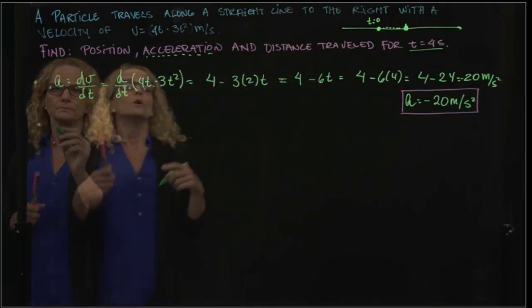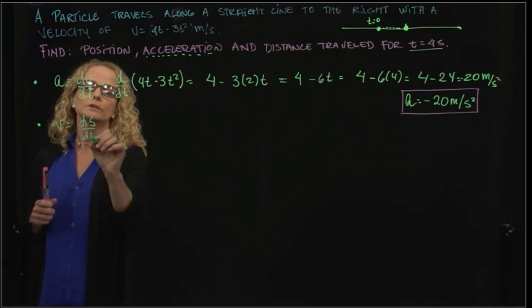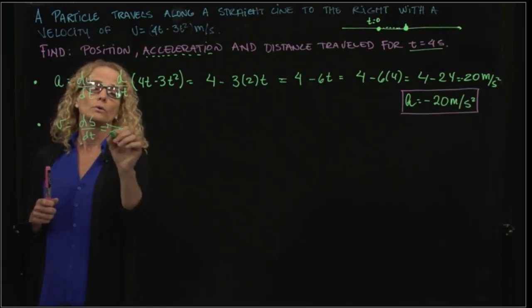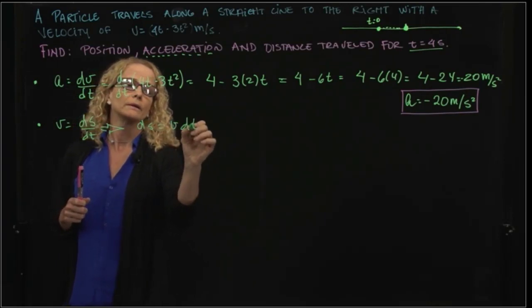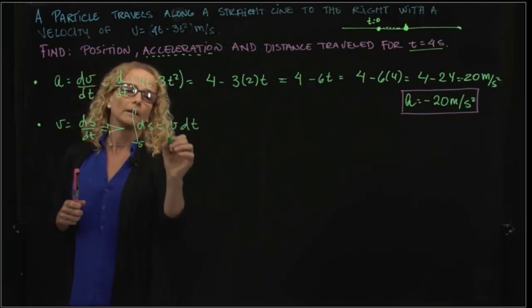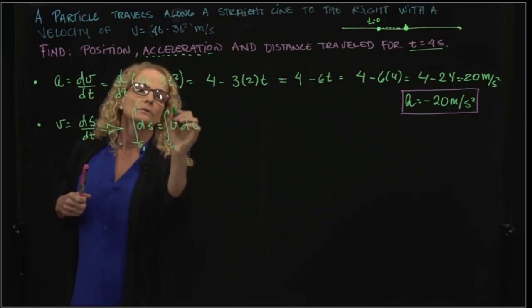Let's find our position. We know that the velocity is the derivative of the position, right? So we can actually integrate the velocity in both sides of the equation, from s₀ to s, from t₀ to t.